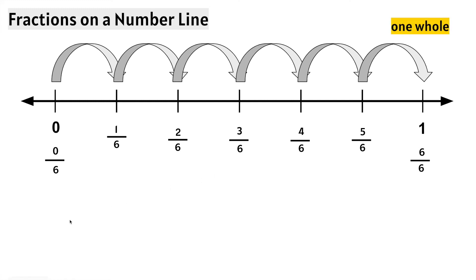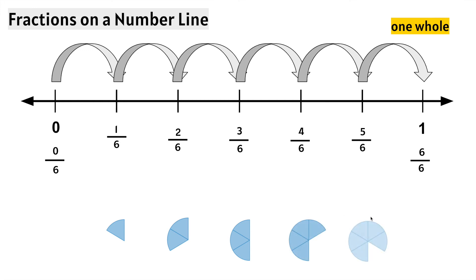It's the same thing as when we're drawing models. The sequence is: 0 sixths, 1 sixth, 2 sixths, 3 sixths, 4 sixths, 5 sixths, and 6 sixths makes 1 whole.